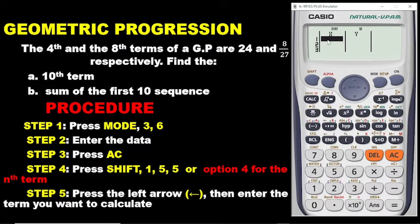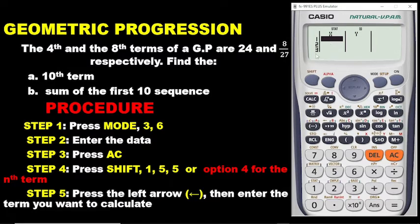This interface shows the X coordinates and the Y coordinates. The X coordinates simply means the number of terms, and the Y coordinates simply means the corresponding values for each term. In the question, we have the 4th term and the 8th term — so we write 4 and 8 under X. The corresponding values, 24 and 8/27, will be written along the Y column.